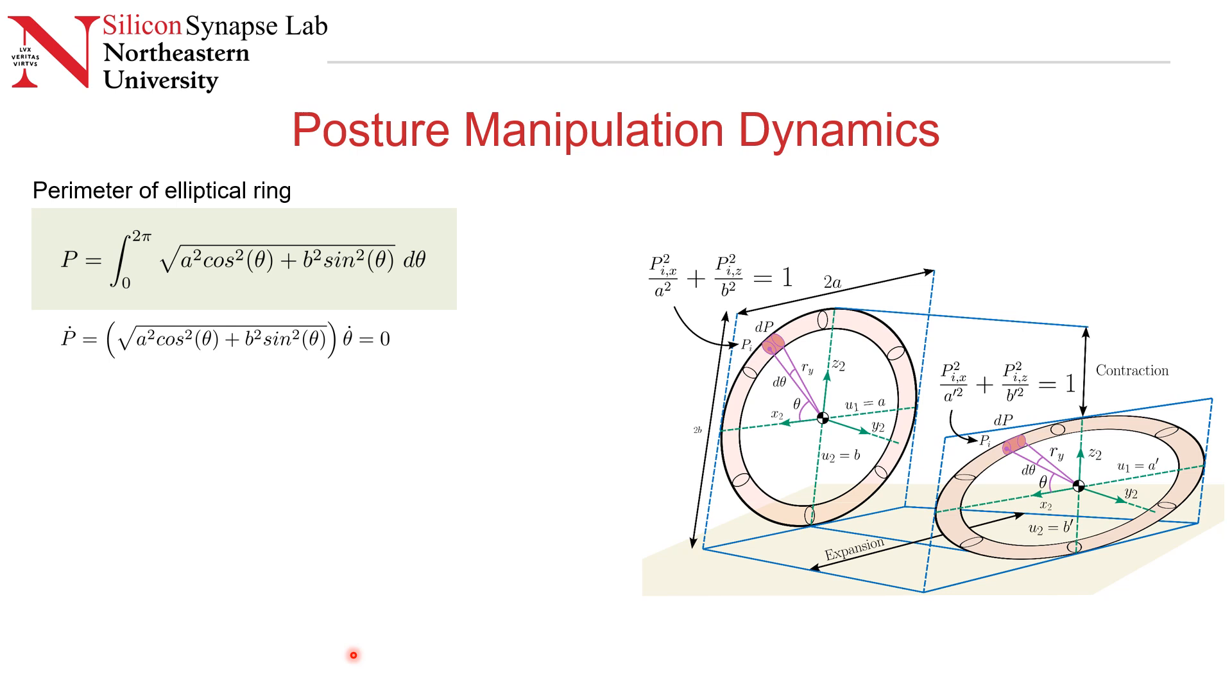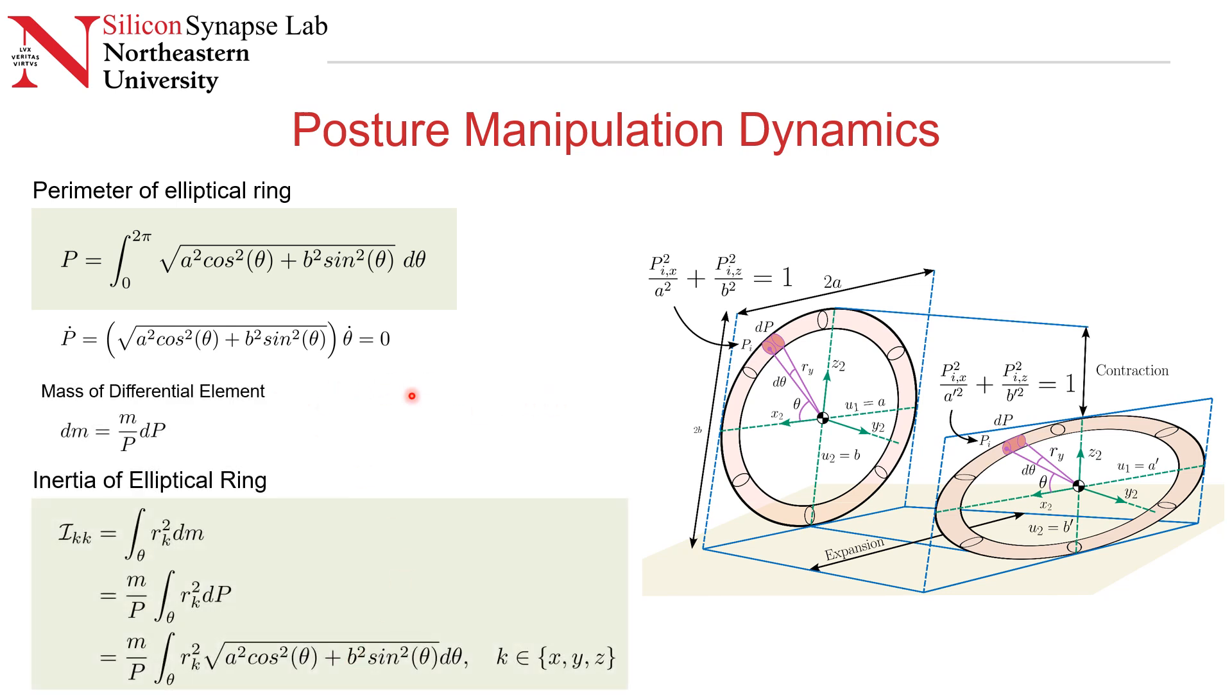Using this relationship, we can define the connection between our control inputs, U1 and U2, and the overall inertia of this elliptical ring. For this differential element DP, given that we are considering this as a line mass of mass m and total length P, the mass of this differential element must be dm. We can take the standard inertia formula as dm times R square, integrate that over 0 to 2 pi, and substitute to get a relationship between our control inputs, A and B, which we are calling U1 and U2, and the inertia of this elliptical ring.